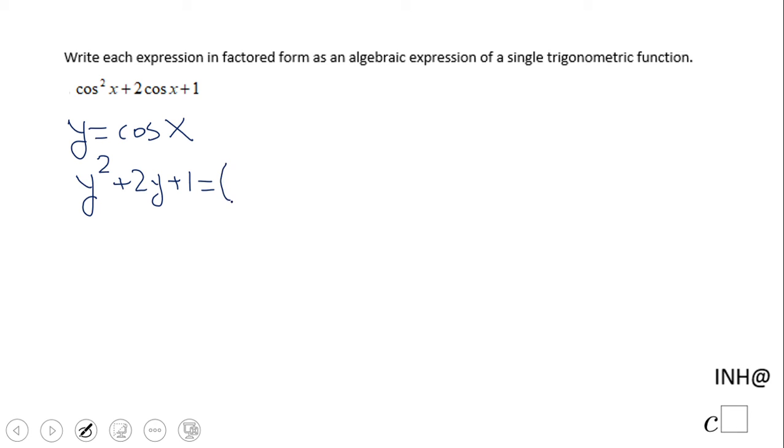If we factor this, we notice it's a perfect square, which is y plus 1 squared. Now, using this substitution and going back to our original problem, the answer is cosine x plus 1 squared.